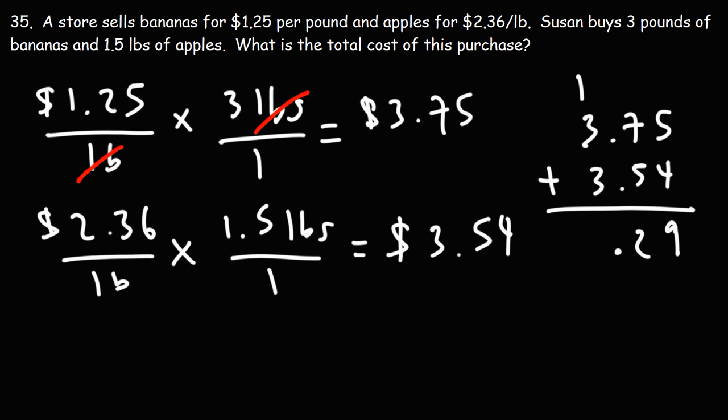For multiplication, that's where you have to count the number of digits to the right of the decimal and make sure that your final answer is the same. But for decimal addition, just make sure that the decimals are lined up and you'll be okay. Now, 1 plus 3 plus 3, that's going to be 7. So the total cost of this purchase is $7.29.